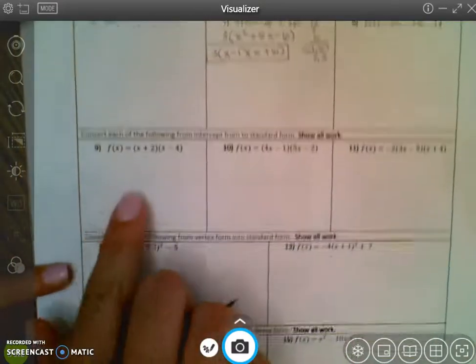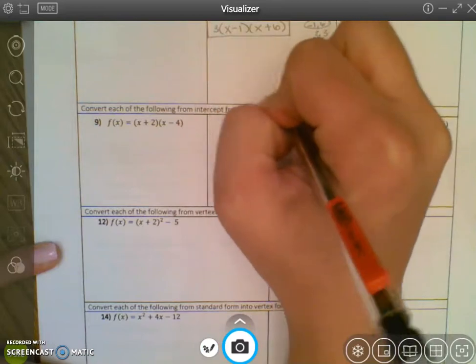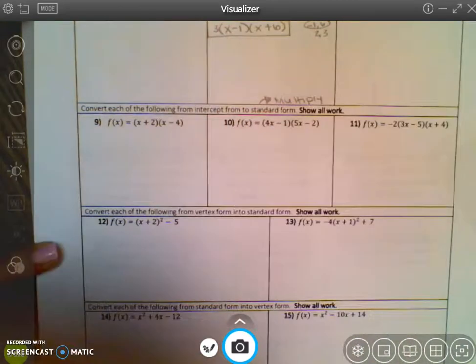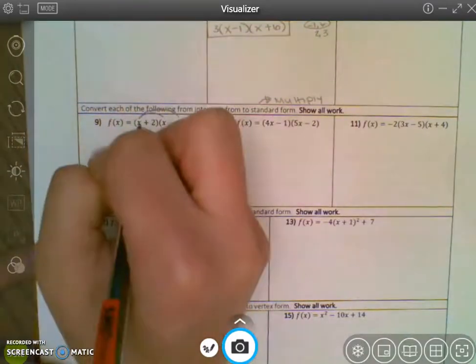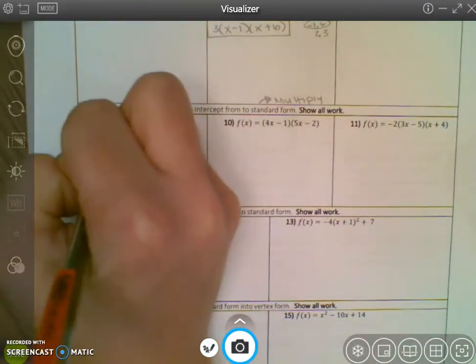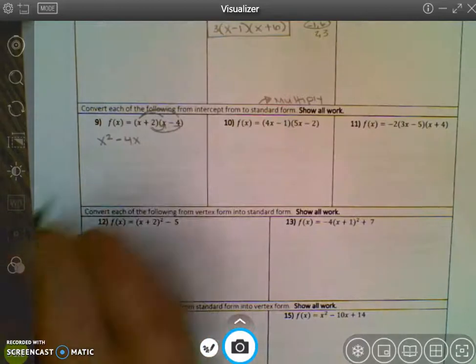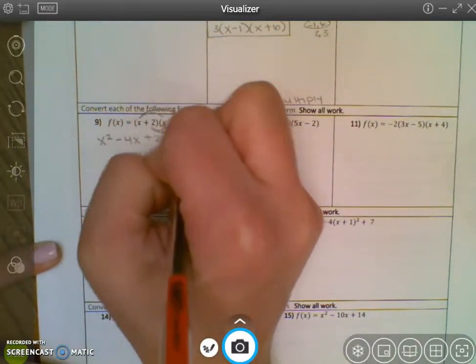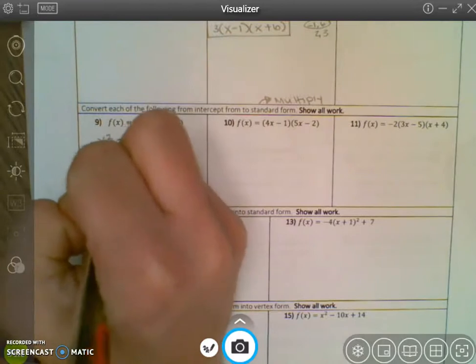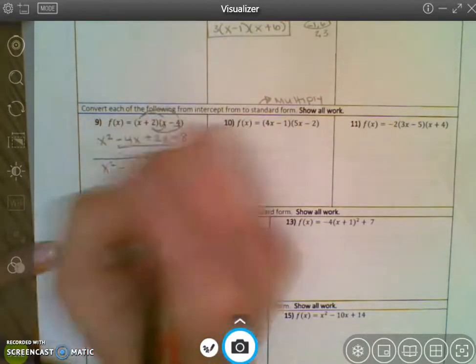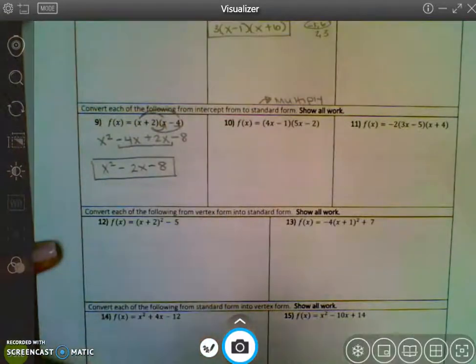Down below, it says convert intercept form to standard form. Standard form, remember, that's when you're going to multiply everything out. That's when you're multiplying. So x times x, x times 4. So now the x has gone to both of them. So that's x squared and a negative 4x. Then I have to make the 2 go to both of them as well. 2 times x is a positive 2x. 2 and negative 4 is negative 8. Do not leave it like this. You have to add like terms. So x squared minus 2x minus 8. And technically, you know you should put f of x.